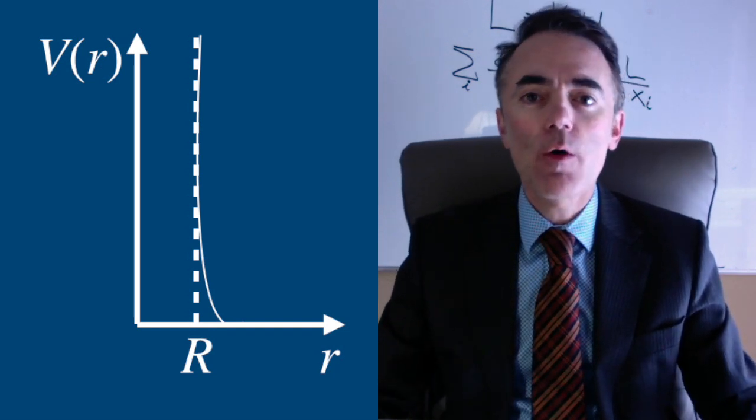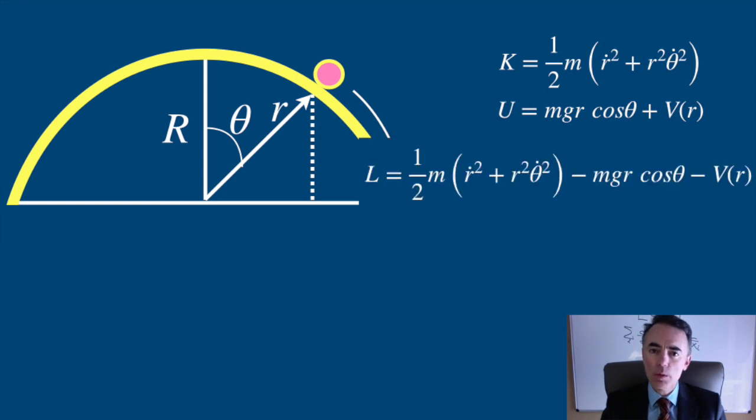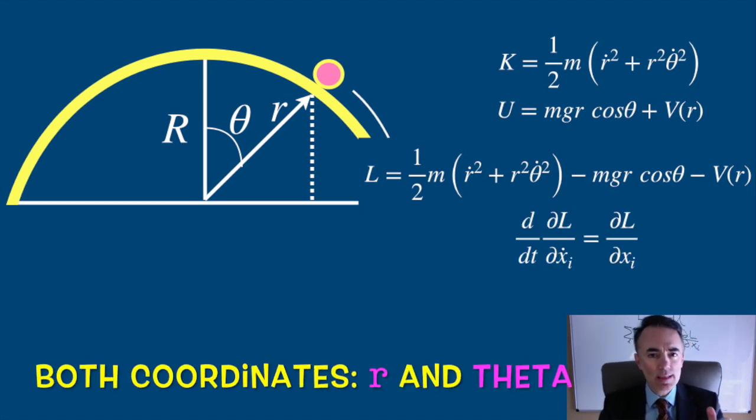Because of this, I now write the full Lagrangian as one half of m times r dot square plus r square theta dot square minus m g r cosine of theta minus V of r. Now I apply Lagrangian's equations to both coordinates r and theta.